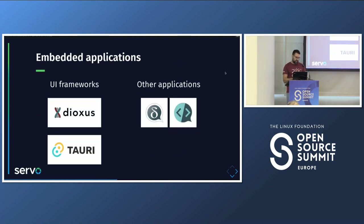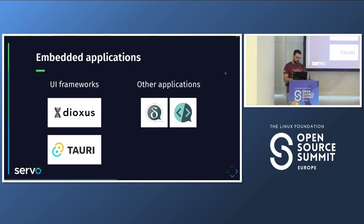Servo can be used for embedded applications. In the Rust ecosystem there are UI frameworks like Dioxus or Tauri that let you create applications using web technologies and need a WebView to render them. They're currently using Chromium WebView or system-provided options, but they're looking into using a Rust rendering engine. We're talking to them, and for the next quarter and next year we'll have some prototypes of Tauri using Servo. There are also other applications like Delta Chat, a security-focused chat app, which has mini web apps called XDC apps that can run small games or polls inside the chat, and they want to give Servo a try for running those.